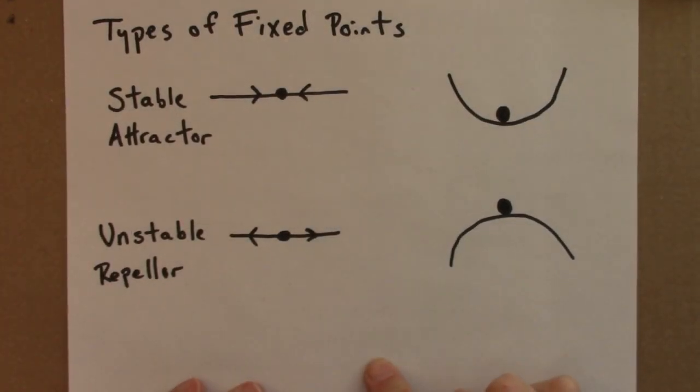The distinction between stable and unstable fixed points is important. In real systems, one would not expect to encounter unstable fixed points for the simple reason that they don't stick around for long. A simple bump, a small bump to the left or to the right, and the object moves off, not to return.